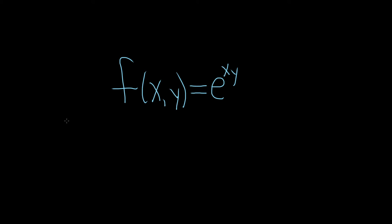First let's find ∂f/∂x. This is the partial derivative of f with respect to x. Whenever we take this derivative we treat all of the y's as constants, so this y here is going to be like a constant. We're going to use the chain rule.